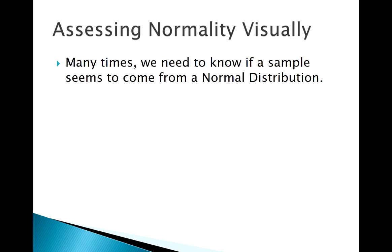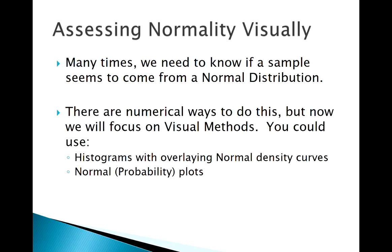There are numerical ways of doing this, like more complicated tests. Maybe we'll see some of those in the future, but we're looking at visual methods here. One really obvious, simple way of doing this is just to make a histogram and overlay a normal curve and just see how well that fits. The other way is what we might call a normal plot or normal probability plot.